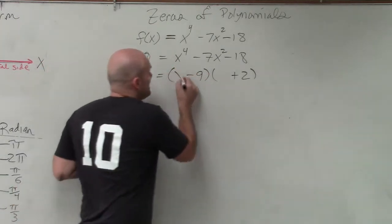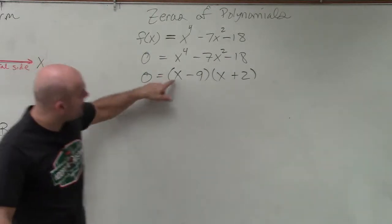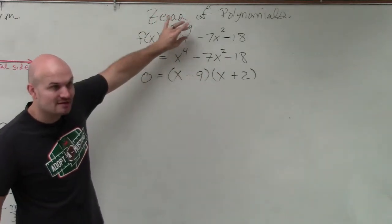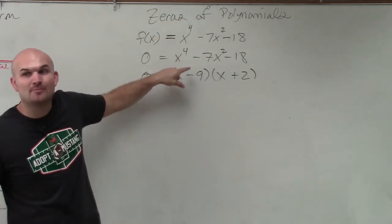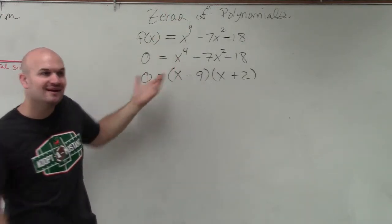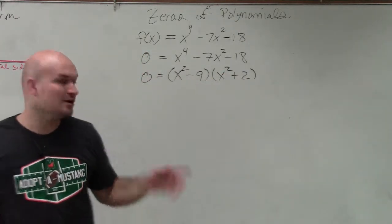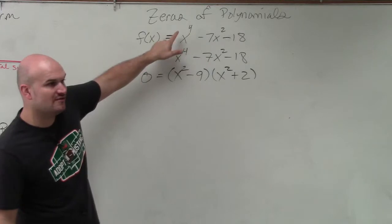Now we know it can't be this, because if you were to multiply this, x times x would give you x squared. But we need to get to x to the fourth. So what do you think we should have as our power of x? Squared. And guess what? Does that work? Does x squared times x squared give you x to the fourth? Yes.